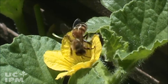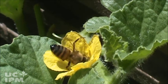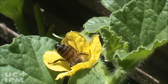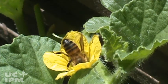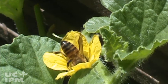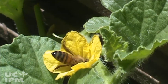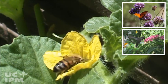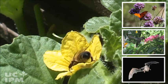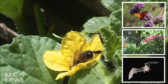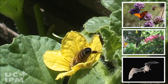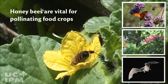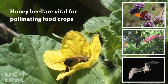Many California crops rely on bees to pollinate their flowers and ensure a good yield of seeds, fruit, and nuts. Although various insects, birds, and other organisms pollinate certain plants, bees, especially honeybees, are the most vital for pollinating food crops.